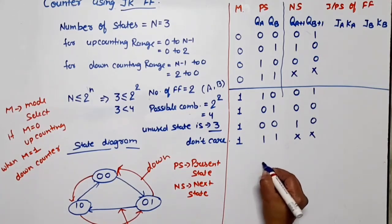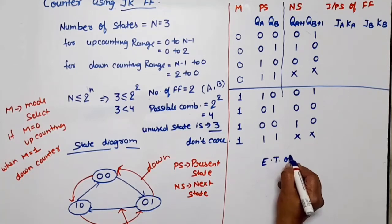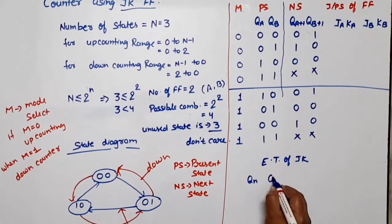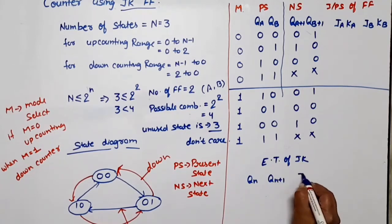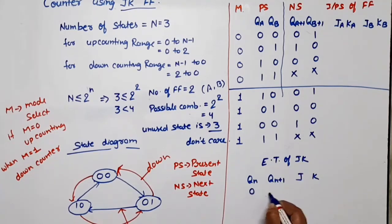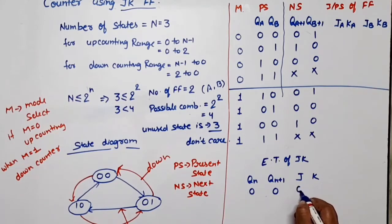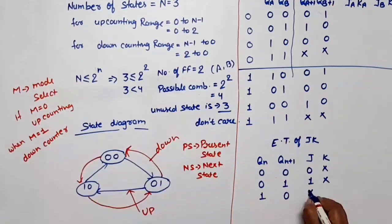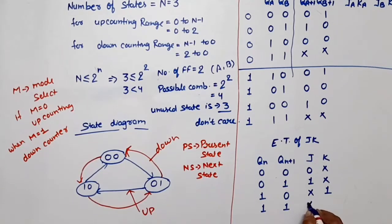The excitation table of JK flip-flop: Qn is the present state, Qn+1 is the next state. If present state and next state are both 0 (0→0), J=0 and K=don't care. If 0→1, J=1, K=don't care. If 1→0, J=don't care, K=1. If 1→1, J=don't care, K=0.